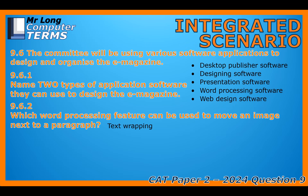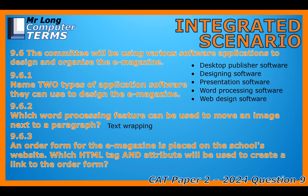As a final step in the digital build, they decide to put an order form on the school's main website so people can actually buy the completed e-magazine. They need a clickable link from the website to that form. Which essential HTML tag and attribute are required to create that hyperlink? To create any navigational link on a web page, you need the anchor tag — written as `<a>` — paired with the href attribute. The tag tells the browser this is a hyperlink, and the href attribute, standing for hypertext reference, specifies the exact destination URL — in this case, the order form page.